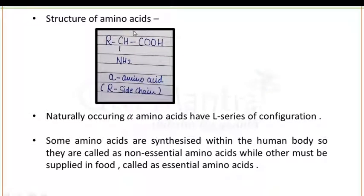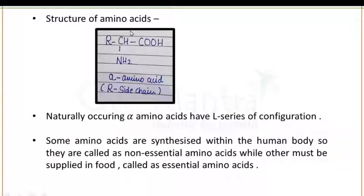The structure of an amino acid must have the amino group (NH2) as well as the COOH group, that is the carboxylic group. Along with these two groups, the structure of amino acid has an R side chain — R is your alkyl group. Also, the naturally occurring alpha amino acids have the L-series of configuration, meaning levo-rotatory configuration.